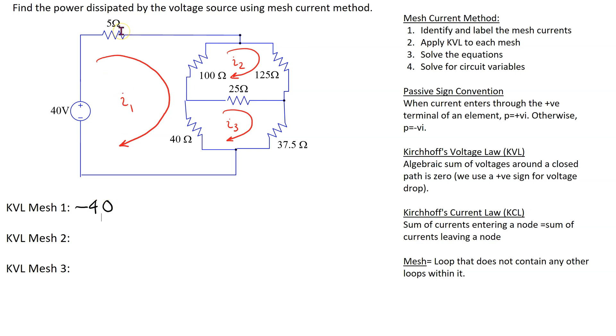Next is the 5 ohm resistor. There will be a voltage drop across the 5 ohm resistor due to the current I1 flowing through it, and we use a positive sign for the voltage drop. Hence we have plus 5 I1.